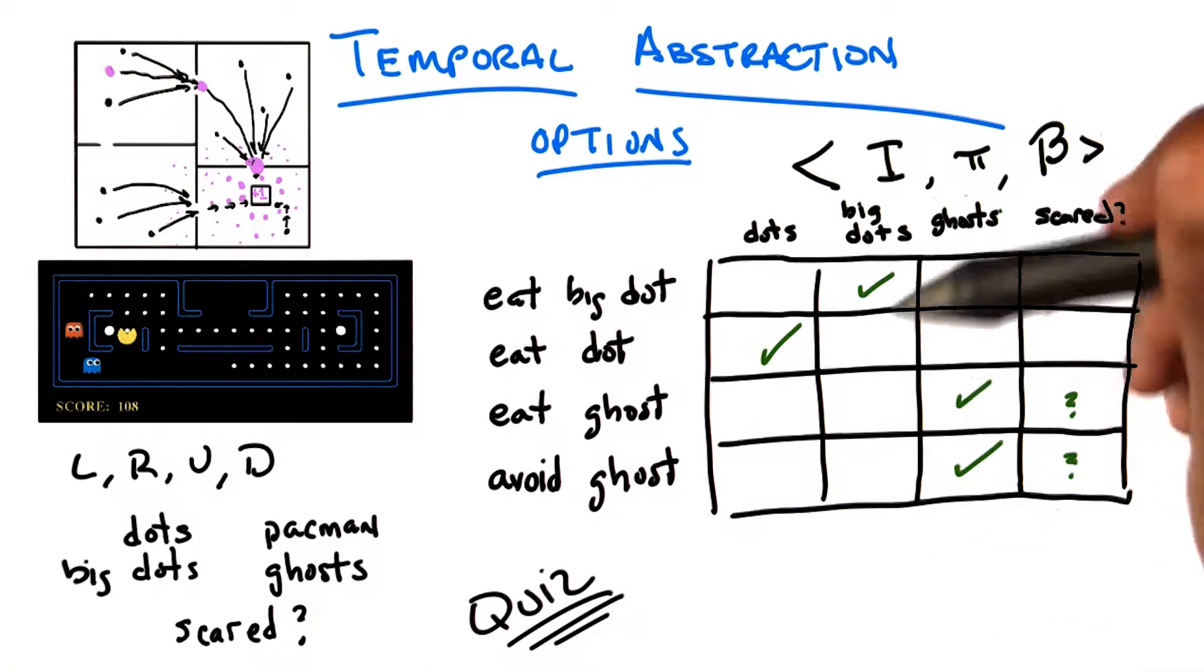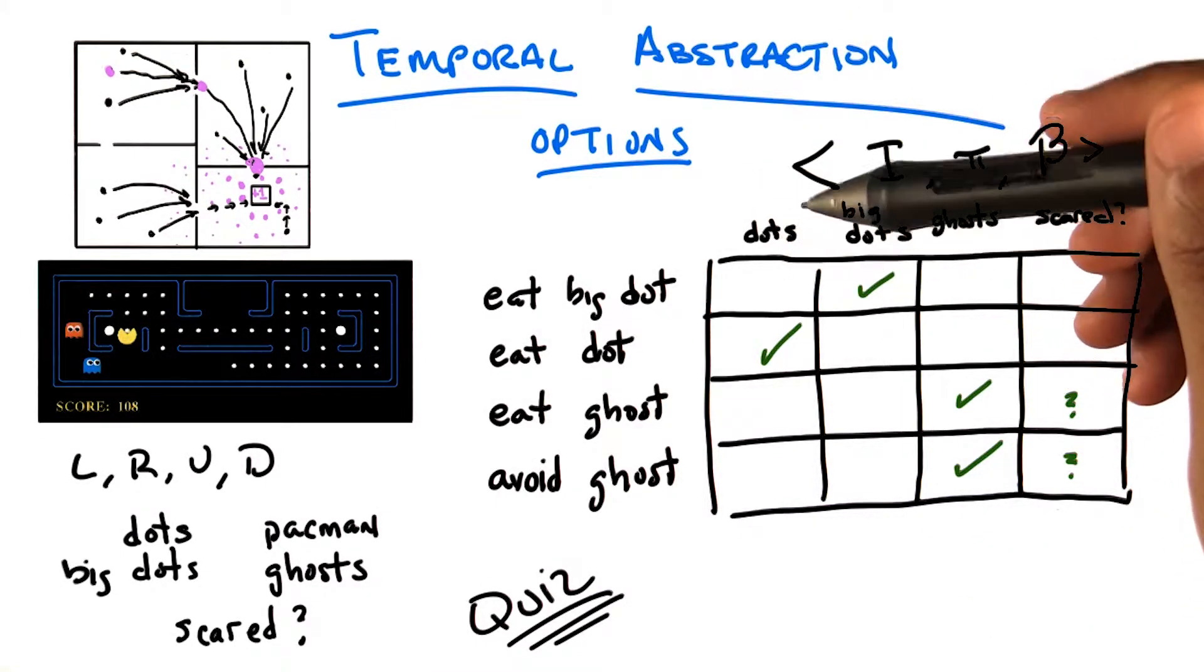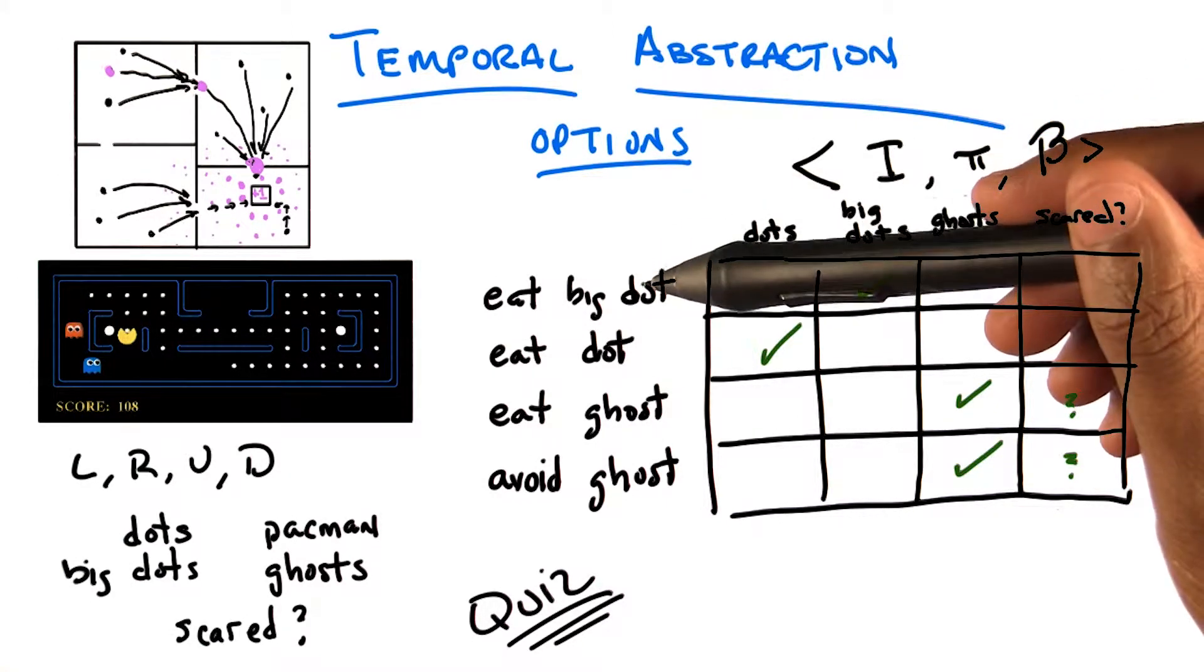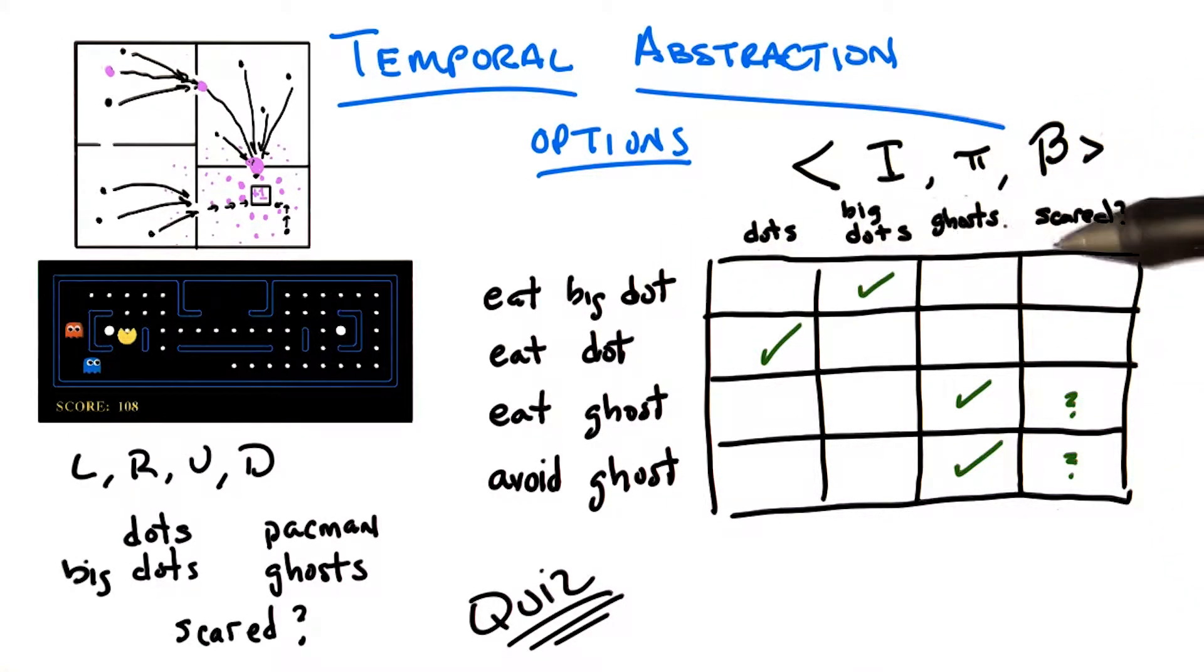If we pop up a level, you can make a similar argument here, which you sort of made when you asked me that question. You asked me the question before we started the quiz, which is, well, if I want to eat a big dot, I need to avoid the ghosts along the way.